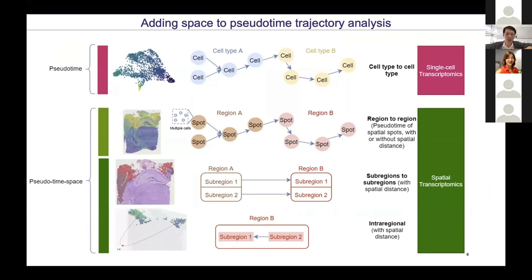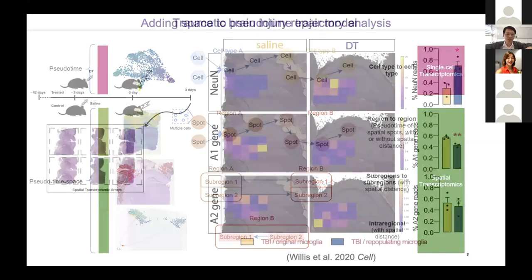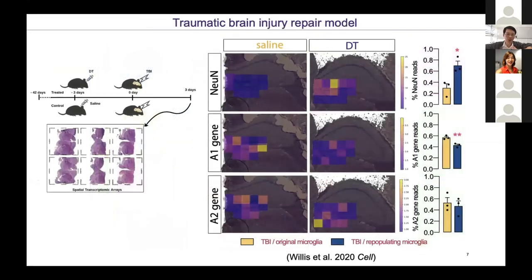We also wanted to use spatial information to improve trajectory analysis commonly used for single cell data. We hypothesized that nearby spots are more similar and aimed to model dynamic processes within a tissue section both spatially and temporally. To answer this, we used a traumatic brain mouse model where we injured a mouse brain and examined the cellular immune responses relative to the injury site. Our spatial transcriptomics analysis showed that within the dentate gyrus region, the presence of microglia was associated with suppression of genes linked to the neurotoxic phenotype.